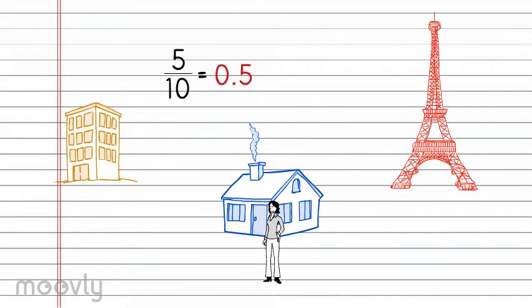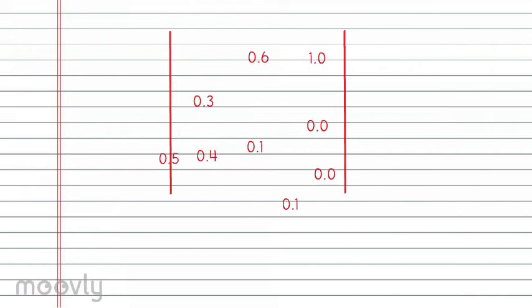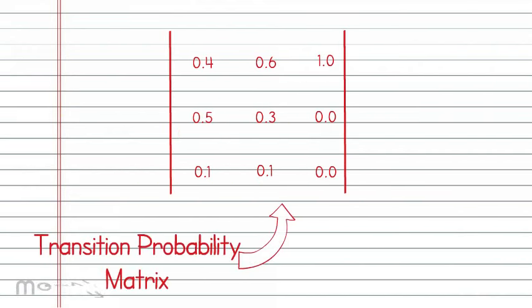Once we have all these statistics, we can construct our Markov model. Typically, our transition probabilities are entered into a transition matrix. Notice that each of the columns of the matrix represents the state Romy came from, and each of the rows represents the state she is going to.